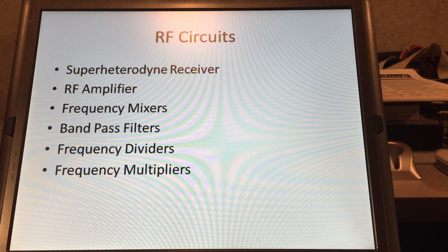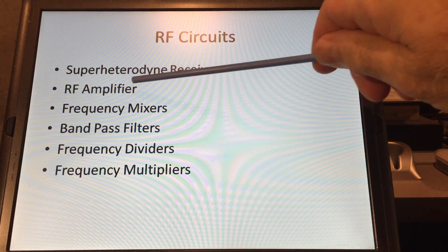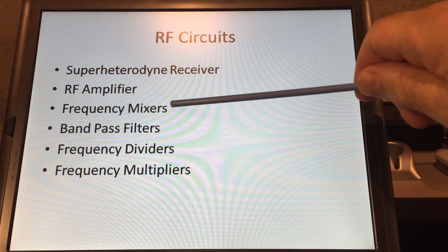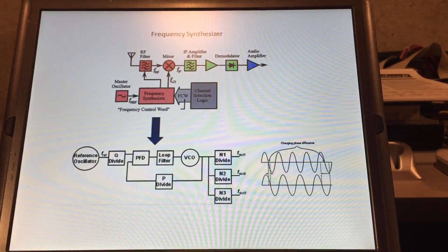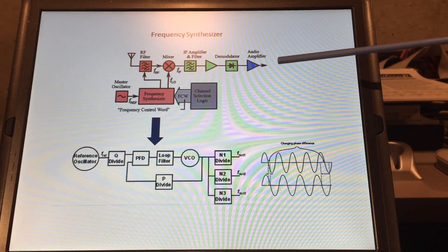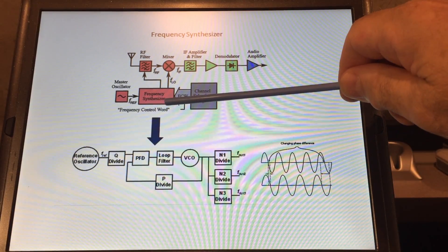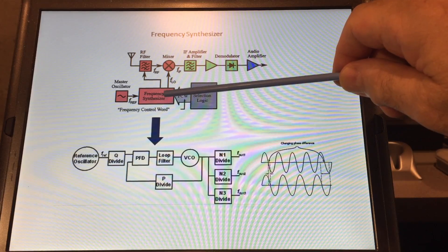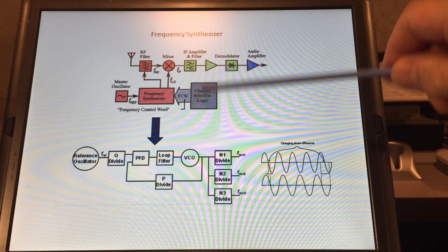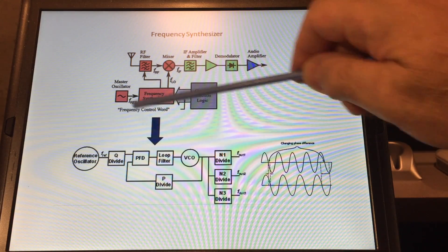RF man here. Today I want to continue my discussion of the super heterodyne receiver. In parts one and two of this four-part video I discussed RF amplifiers, frequency mixers, and bandpass filters. Today I'd like to discuss frequency dividers. Here's the original block diagram for the super heterodyne receiver, and I've added a frequency synthesizer — a lot of modern transceivers use some type of frequency synthesizer with some form of digital control.